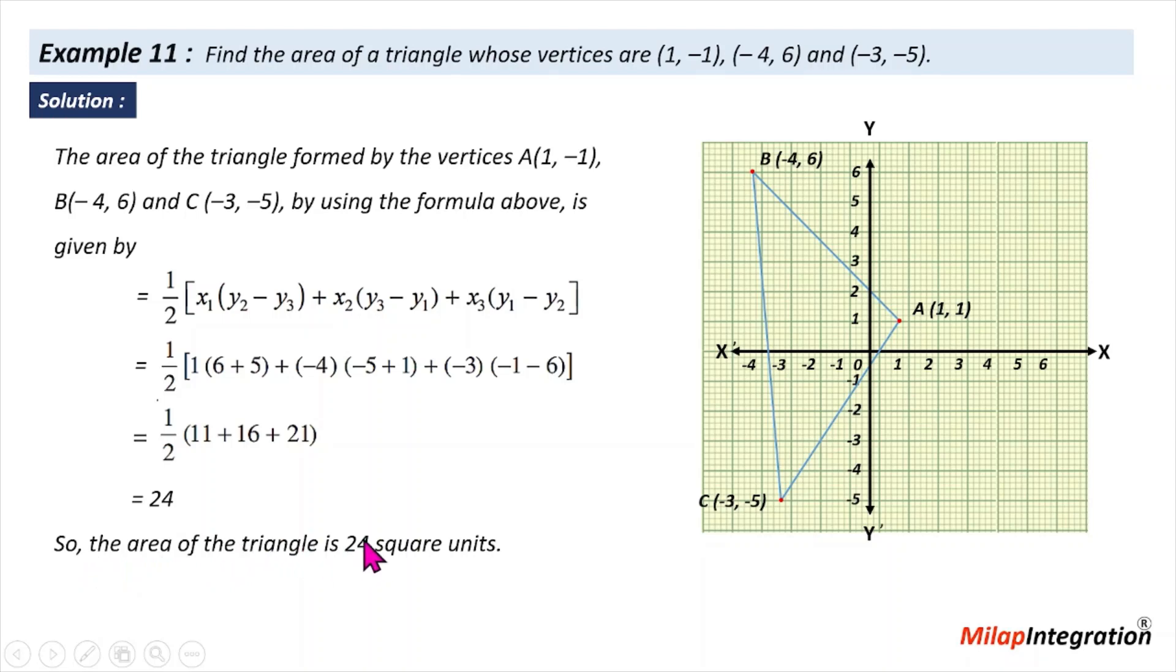Because it is an area, you have to write square units - not distance, which is a single unit. Length into breadth, area, half base into height are unit area - centimeter square, meter square, kilometer square. Because you don't know the unit, you are writing it is 24 square units.